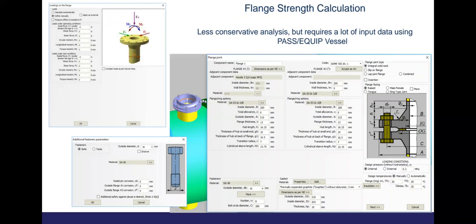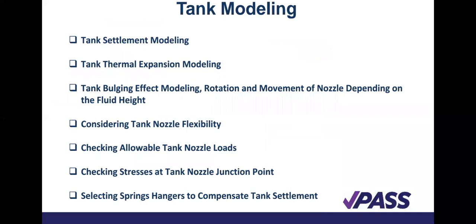Here we look at the tank model — how to model it. You have your tank specimen modeling, your tank thermal expansion modeling, your tank ball joint effect modeling, having rotation among the fluid height. The fluid height will determine how the rotation occurs. It also determines the moment of the nozzle. You look at the tank nozzle flexibility and also check for allowable tank nozzle loads. You also check for the stresses at the tank and the connection of the tank segment. It will help you also for the selection of your spring hanger.